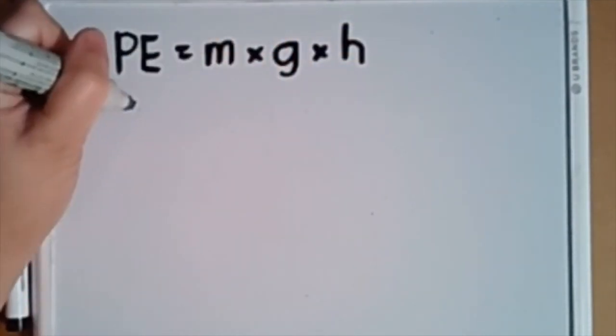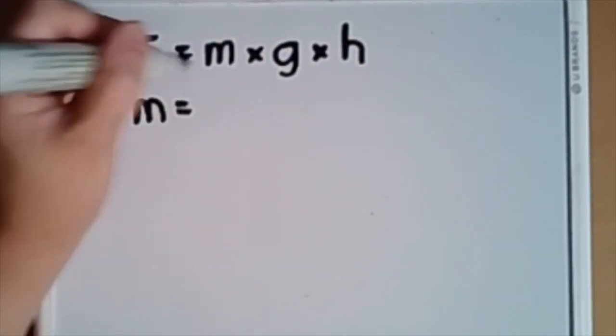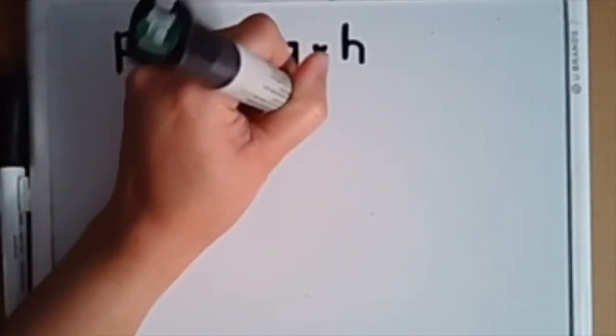Let's look at the PE equation, which equals M times G times the height. In some textbooks, H is replaced by y. It means the same thing—the height from the ground, which is the reference point. The mass is 0.20 kilogram.